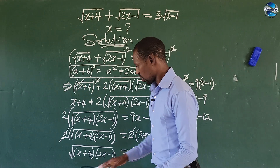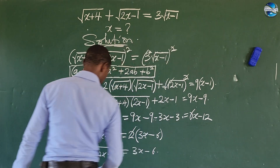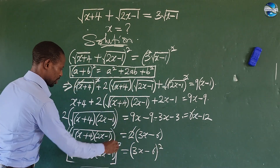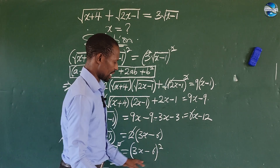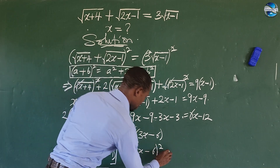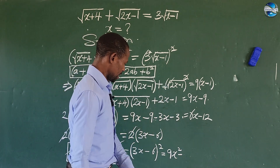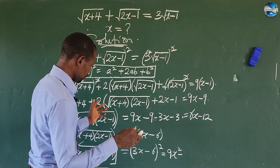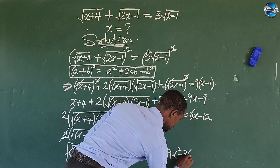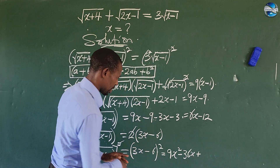We still have a radical, so we take the square of both sides again. Squaring the left side eliminates the radical. Squaring the right side, (3x minus 6)², gives us 9x² minus 36x plus 36.